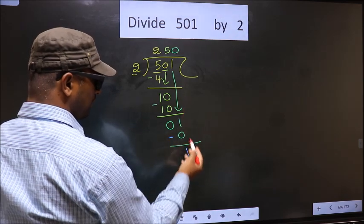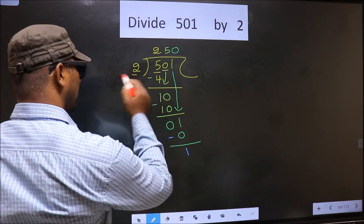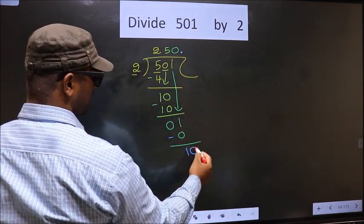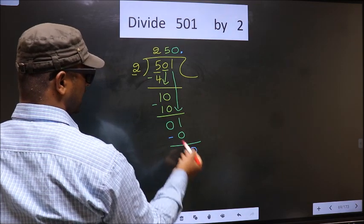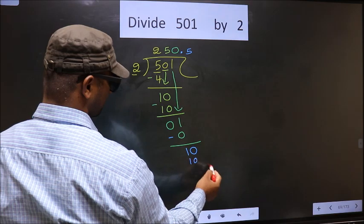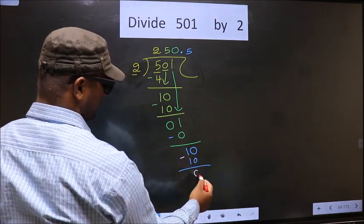Over here we did not bring any number down. And 1 is smaller than 2. So now you put a dot and take 0 here. So 10. When do we get 10 in 2 table? 2 5s, 10. Now you subtract 10 minus 10, 0.